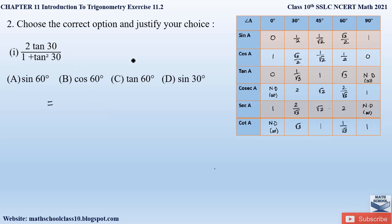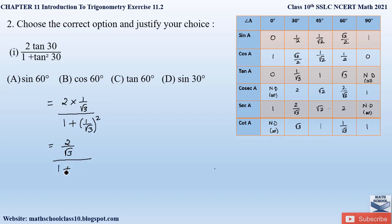Now let us find the value of 2 tan 30. Tan 30 is 1 by root 3. Substituting into the given equation: the numerator becomes 2 into (1/√3), which is 2/√3. The denominator is 1 plus tan square 30, so we square tan 30: (1/√3) squared. The square of 1 is 1, and the square of root 3 is 3, because the square and square root cancel. So we get 1/3.